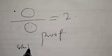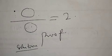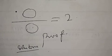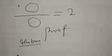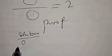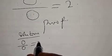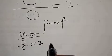Solution. The question is 0 divided by 0 is equal to what? 2. We have to prove.